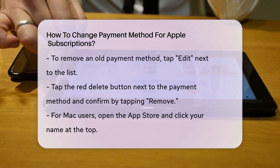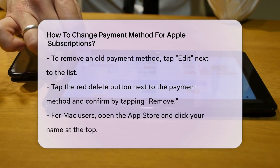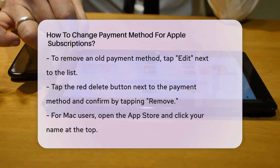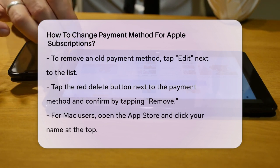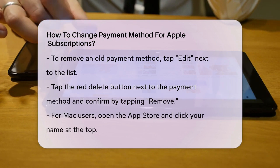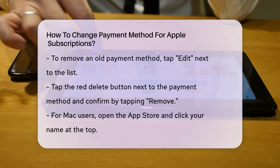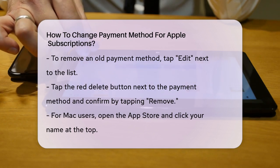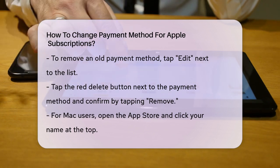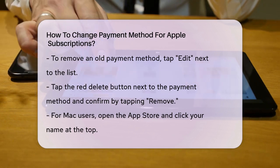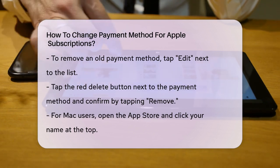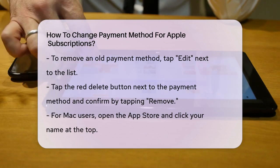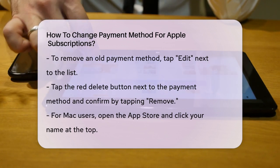For Mac users, the process is slightly different. Open the App Store, click your name at the top, and then click Account Settings. You might need to sign in with your Apple ID again. Next to Payment Information, click Manage Payments. Here you can edit or remove existing payment methods or add new ones.